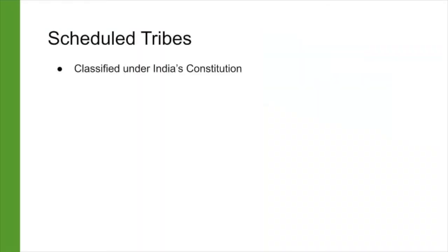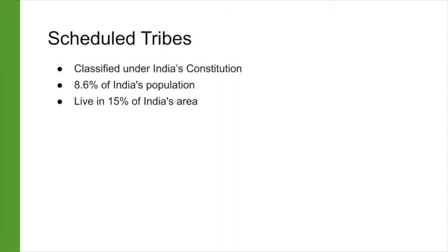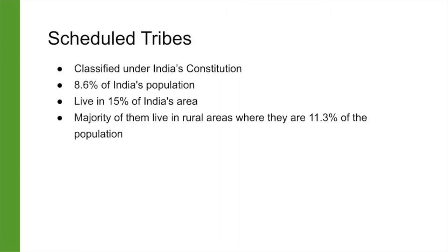It is very important to understand the deprivation faced by communities who live in India's forested landscapes, especially those tribal communities classified as Scheduled Tribes under India's constitution. The Scheduled Tribes account for 8.6 percent of the total population of the country and live in about 15 percent of its area. The majority of the Scheduled Tribe population lives in rural areas, where they account for 11.3 percent of the population.